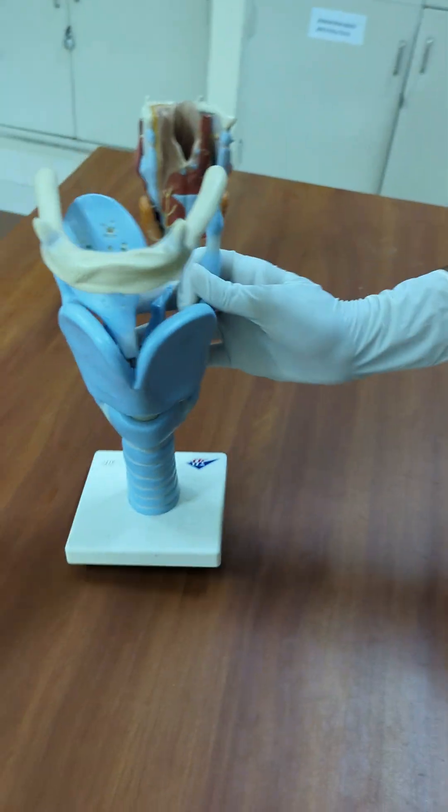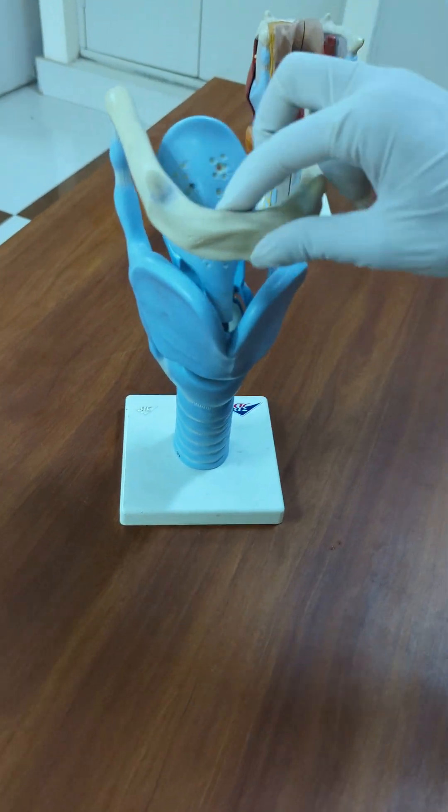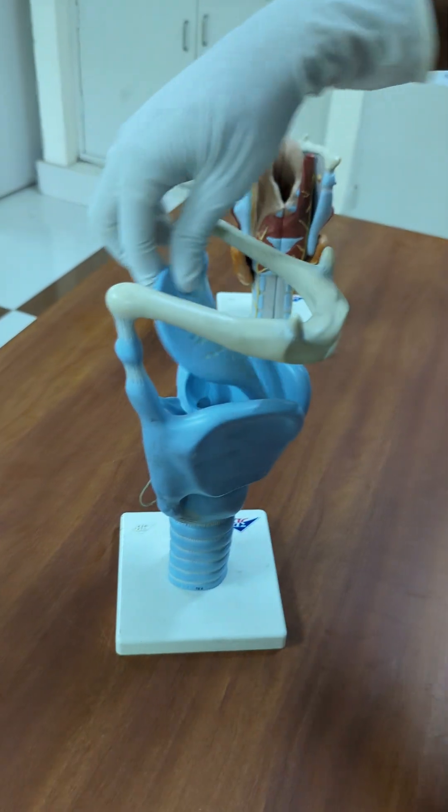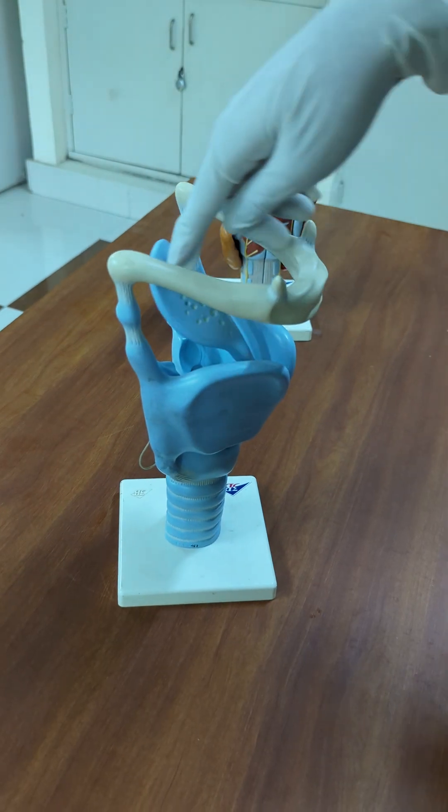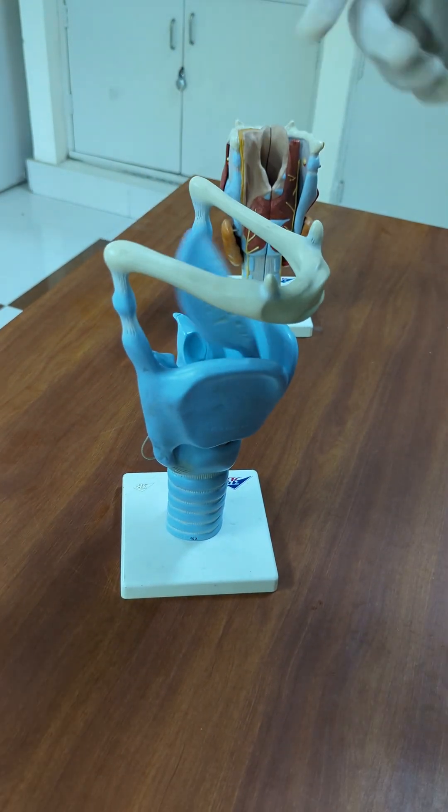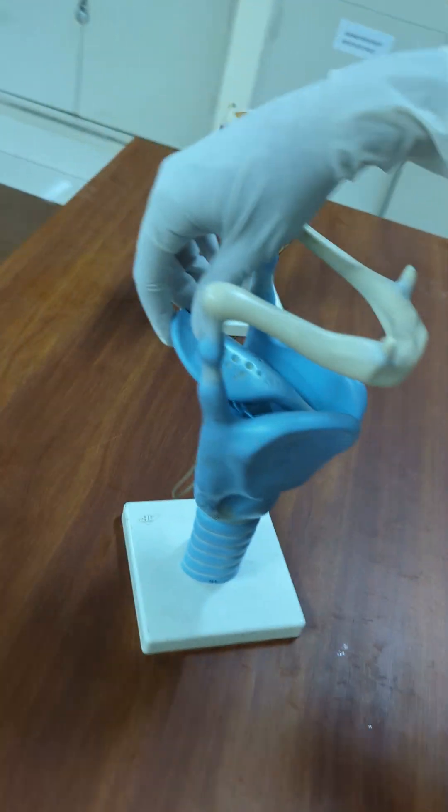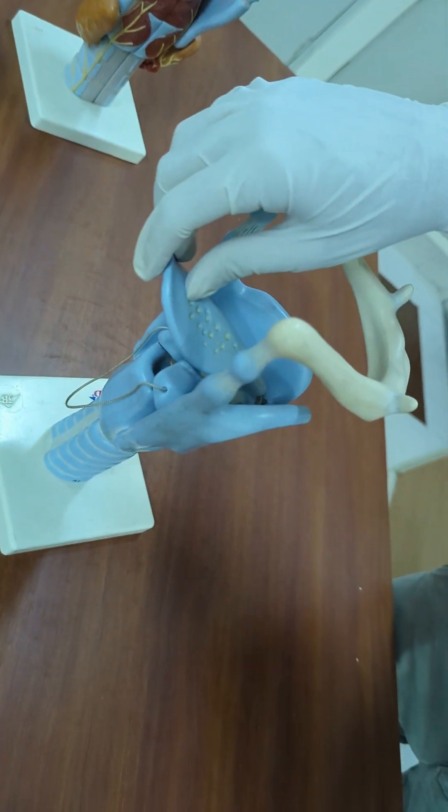So this is the larynx. This is the thyroid cartilage, this is the hyoid bone, this is the epiglottis as you can see, the flap. When we swallow the food this goes closed so the food doesn't enter the respiratory tract.